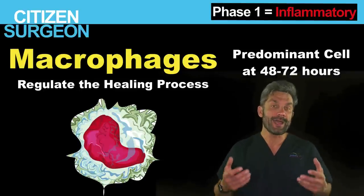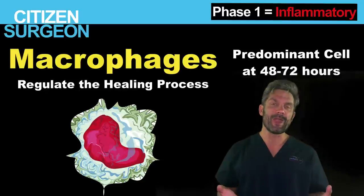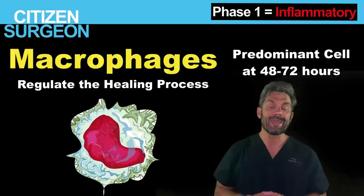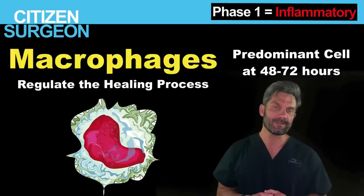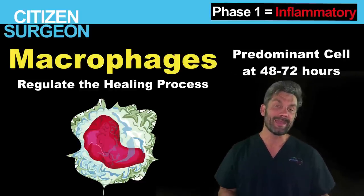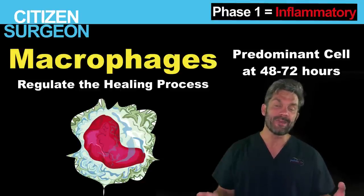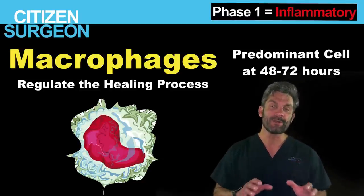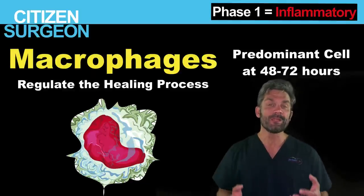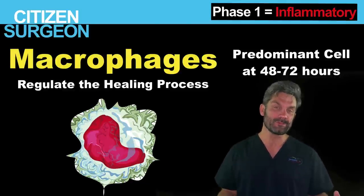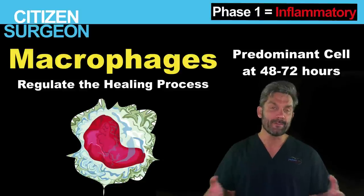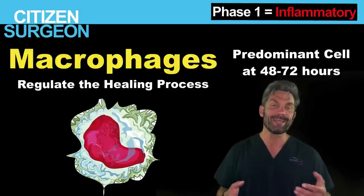Why are macrophages the primary regulator of wound healing? Because macrophages secrete a ton of growth factors — everything from TGF-beta and TGF-alpha, platelet-derived growth factor, EGF, fibroblast growth factor, and VEGF. The macrophage is really responsible for elaborating these growth factors to get fibroblasts into the wound and start laying down collagen.